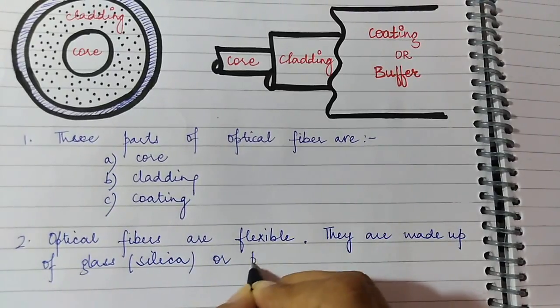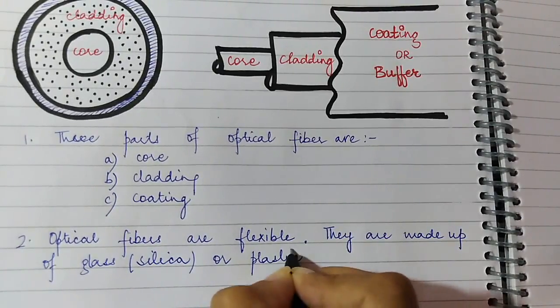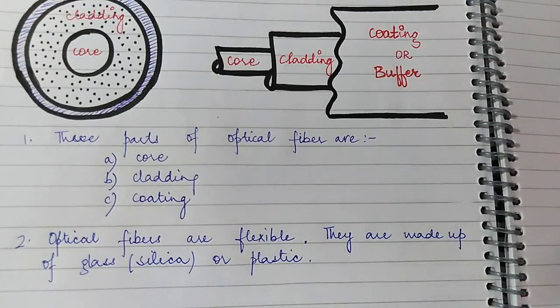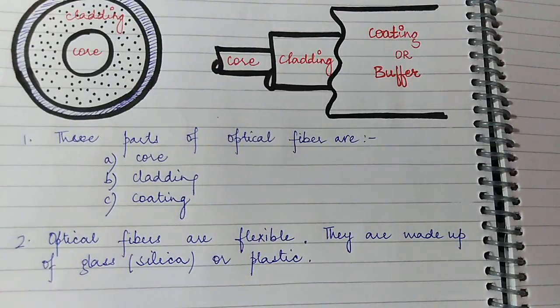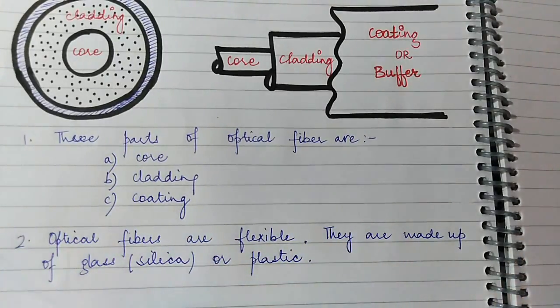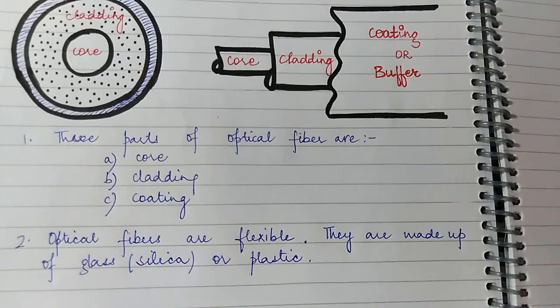Or plastic. And they are like in the shape of a human hair. I would show you a human hair, so this, and this much thick is the optical fiber. And you must know that the diameter is really very small for the optical fiber, so it is measured in microns.